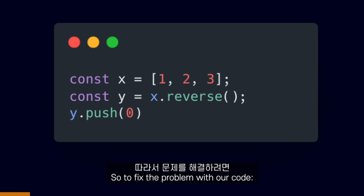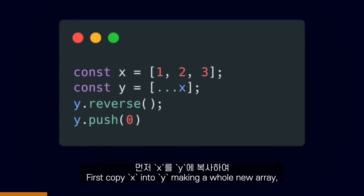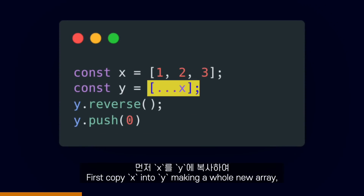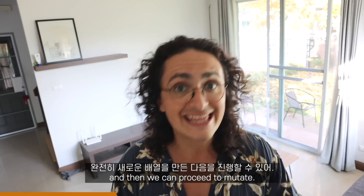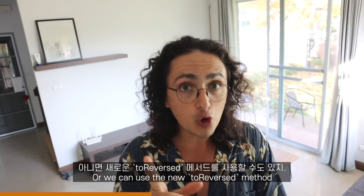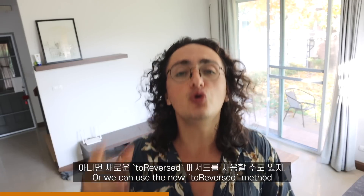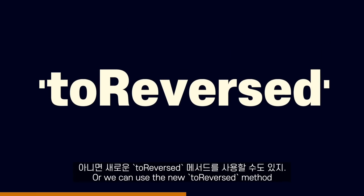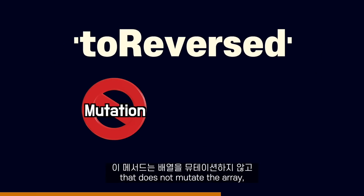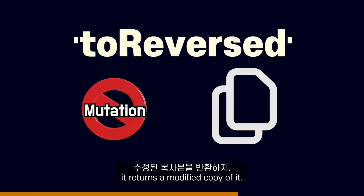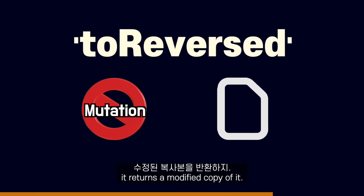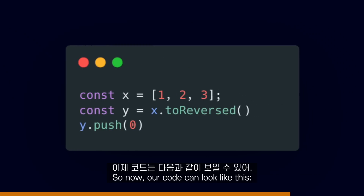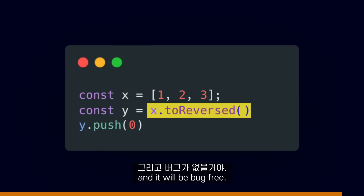So to fix the problem with our code, we have to first copy X into Y, making a whole new array, and then we can proceed to mutate. Or we can use the new toReversed method that does not mutate the array — it returns a modified copy of it. So now our code can look like this, and it will be bug-free.